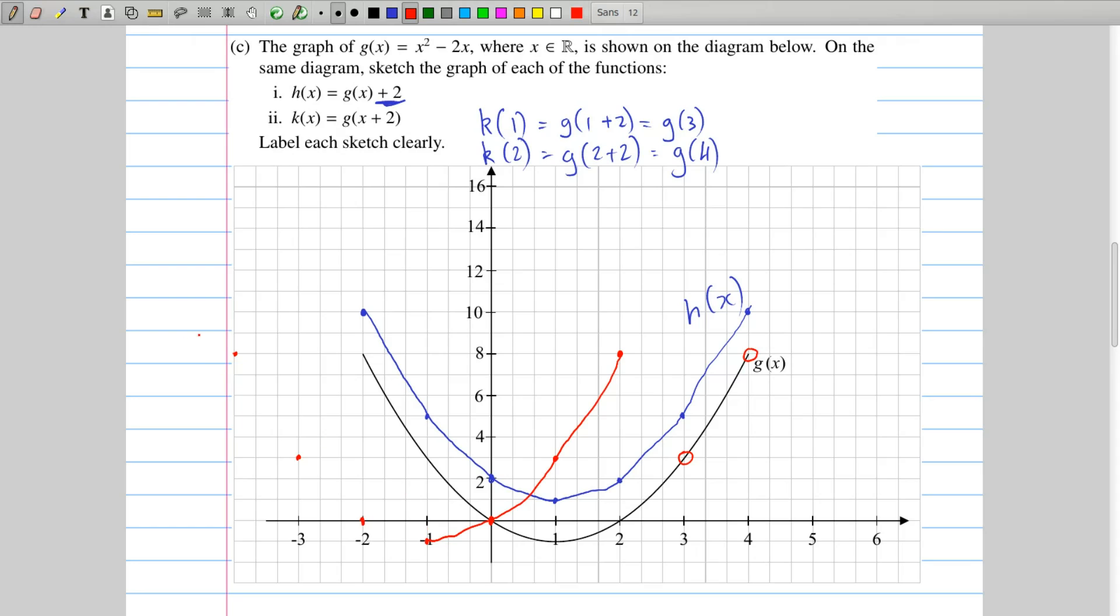And so we end up with this kind of shape. Again, apologies for the state of the drawing. It is difficult to do on these graphics tablets. And we end up with something like that. And hopefully again, you can see that it has pretty much the same shape as g. It's just been moved over two places. And it does have to label each sketch clearly. So this is k of x there.